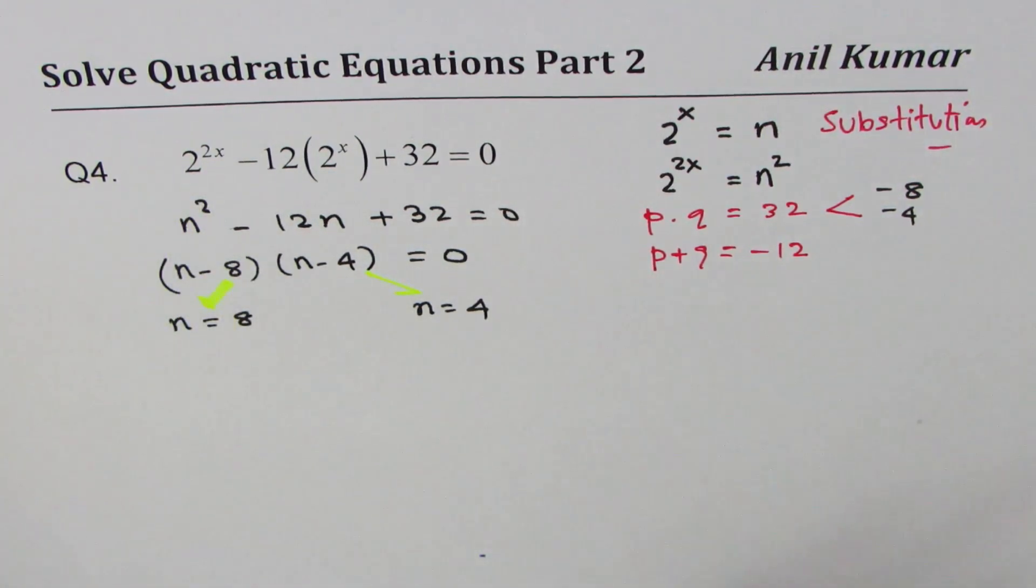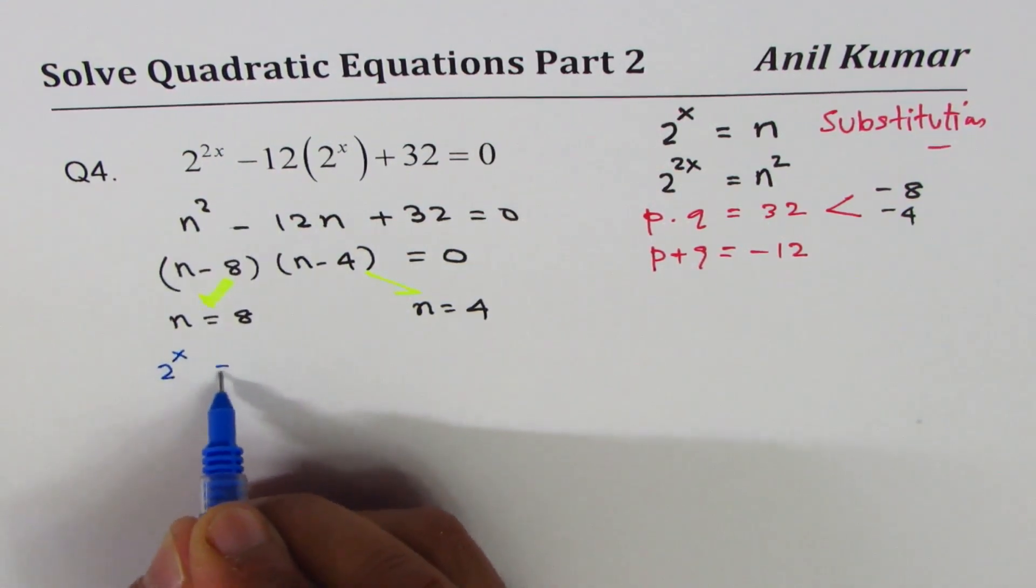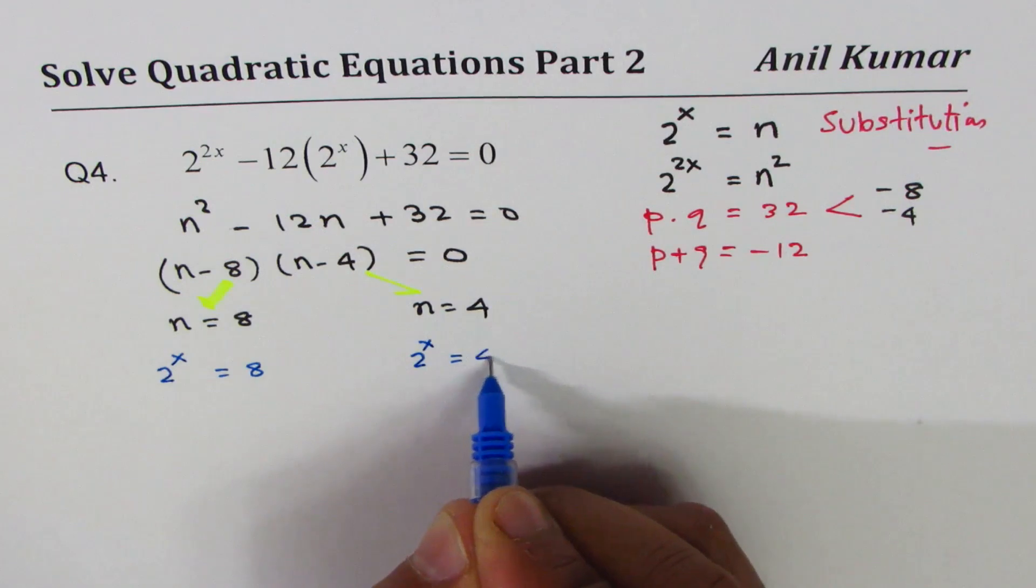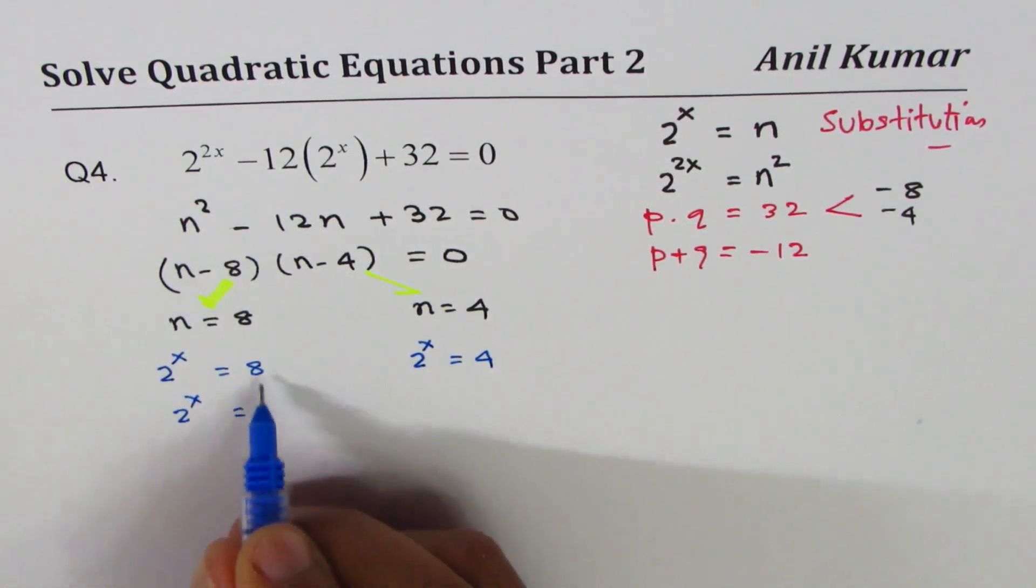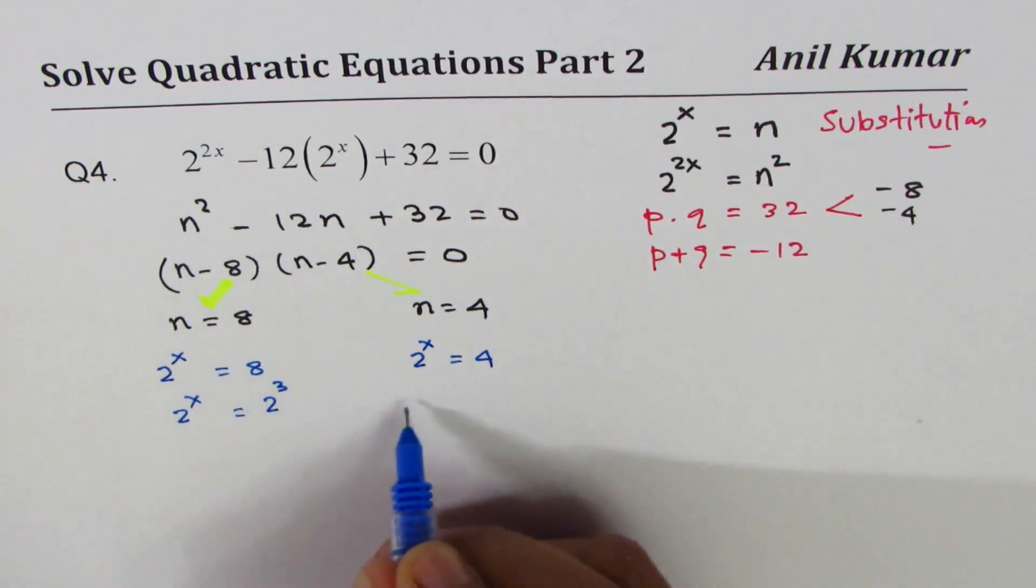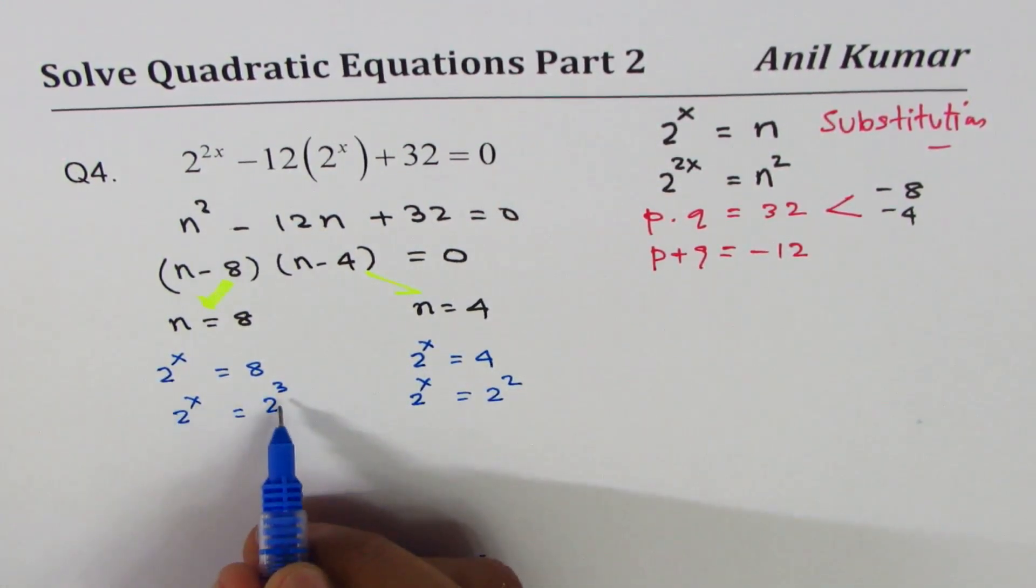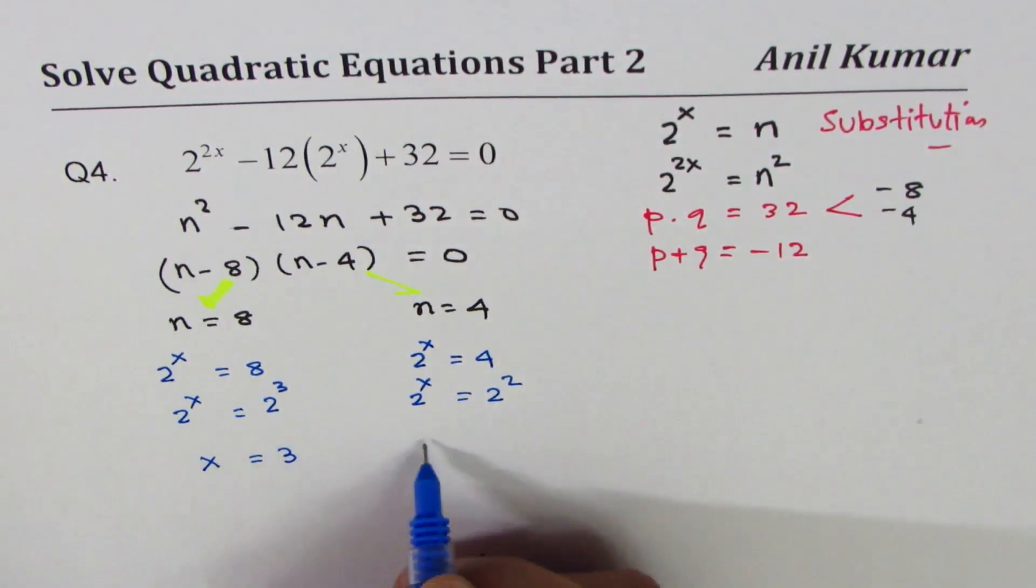n is 2 to the power of x. We can write this as 2 to the power of x is 8. Here we can write 2 to the power of x is 4. Now 8 is 2 cubed, and 4 is 2 squared. Comparing same base, exponent should be equal. x equals to 3, x equals to 2.